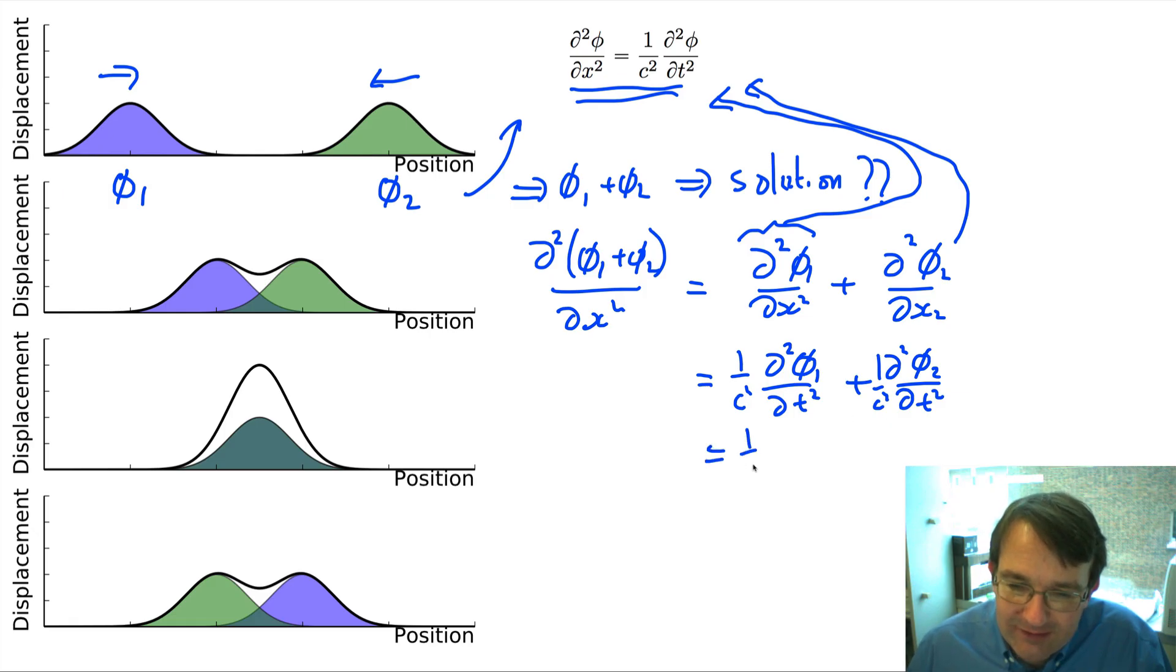Well, now I can just factor this. This is 1 over c squared and then it's going to be partial squared. And I can combine these together, phi1 plus phi2 divided by partial t squared. So, what I've shown here is that if phi1 and phi2 are independently solutions to the wave equation, then the sum of the two of them is also a solution to the wave equation. And that's why we can just add the two displacements together because the sum of these two independent solutions is also a solution to our wave equation. And the reason for that is that the wave equation is what we call a linear equation.